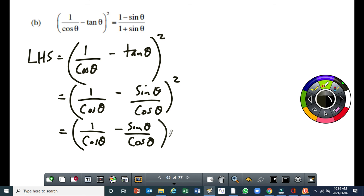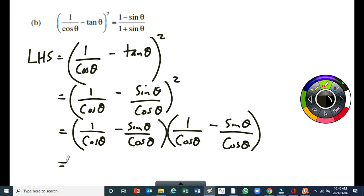Then we have to multiply the two binomials. So, I'm sure you can see that both of them have got a common denominator which is cos θ. Therefore, I can write my next step as 1 minus sin θ over cos θ.